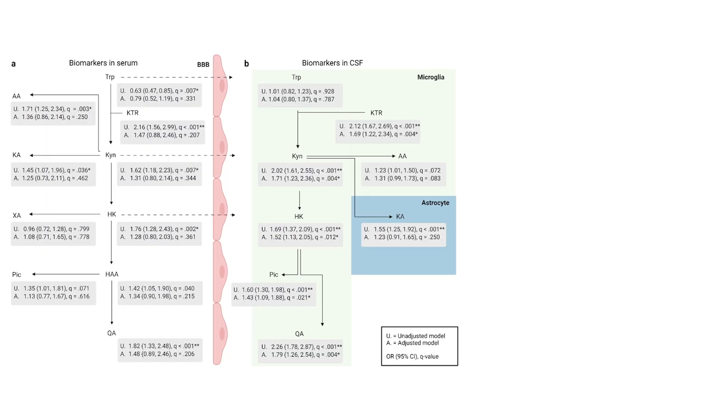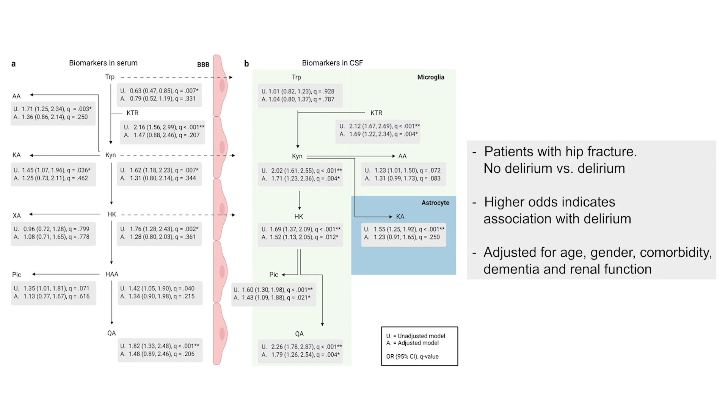This lists all the measured kynurenines and odds ratios in unadjusted and adjusted analysis, which were also adjusted for multiple comparisons. Briefly, quinolinic acid in both adjusted and unadjusted analysis was mostly associated with delirium. It had the strongest association. Other kynurenines produced by microglia remained significant in adjusted analysis. However, kynurenic acid and serum metabolites were confounded in adjusted analysis.